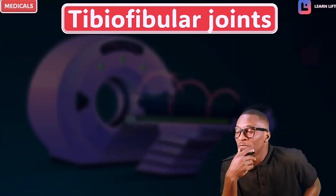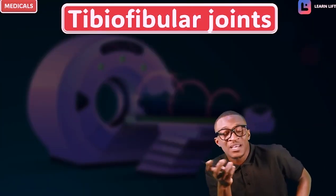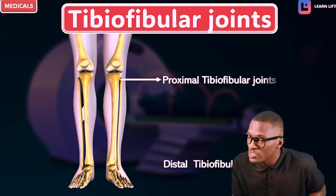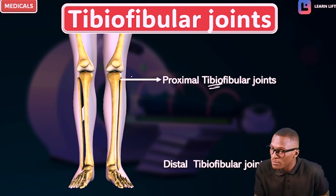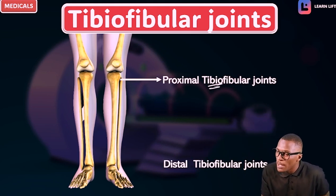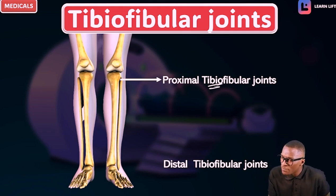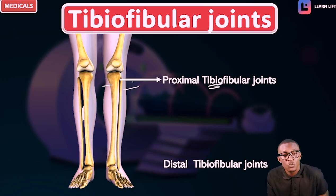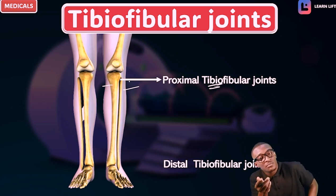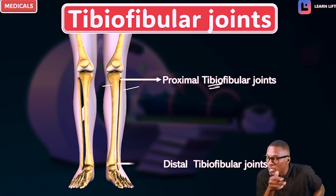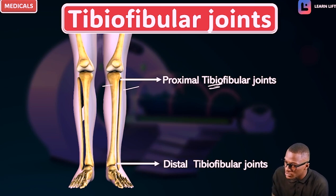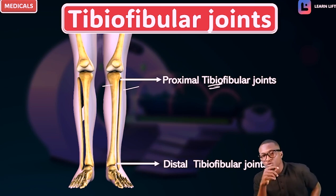Let's now look at the tibiofibular joint. We have the distal and we have the proximal. Proximal means up. It is formed by your tibia and your fibula — tibia is the thick one, fibula is the thin one. So tibia and fibula — the proximal tibiofibular and the distal tibiofibular. Both of them are identified here.